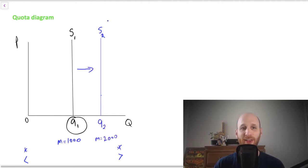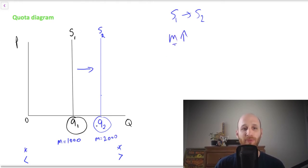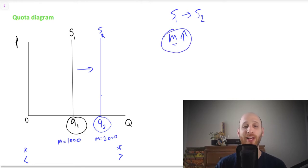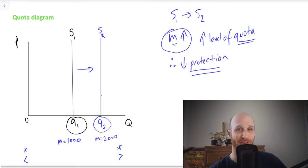So with S2, if we go from S1 to S2, the level of imports increases. I've just put numbers here, but you can see that because we're moving further away from zero, the level of imports are increasing. So we have increased the level of the quota. We are letting in more imports, so therefore we have reduced protection.